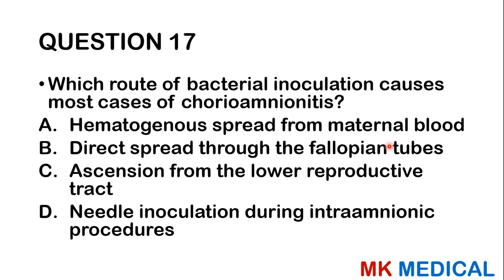Question seventeen: Which route of bacterial inoculation causes most cases of chorioamnionitis or intrauterine infection? A, hematogenous spread from maternal blood; B, direct spread through the fallopian tubes; C, ascension from the lower reproductive tract; D, needle inoculation during intra-amniotic procedures. Using common sense — spread through the bloodstream is not easy, spread from the fallopian tube has barriers, needle inoculation is less common. Most likely in the background of ruptured membranes with no labor, bacteria ascend and cause chorioamnionitis. The answer is C.